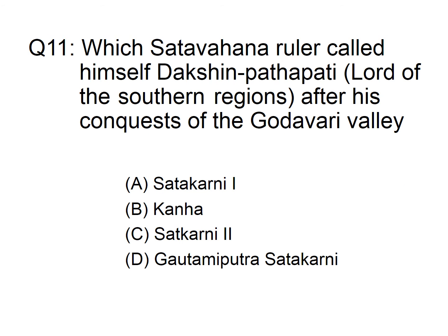Which Satavahana ruler called himself Dakshinapathapati — that means the lord of the southern regions — after his conquests of the Godavari valley? Option A: Satakarni I, B: Kanha, C: Satakarni II, D: Gautamiputra Satakarni. The correct answer is option A, Satakarni I.